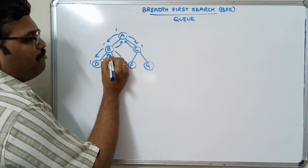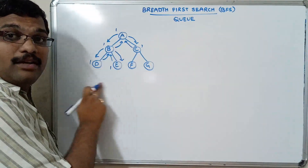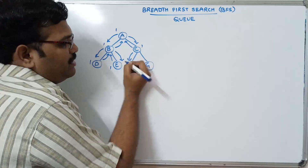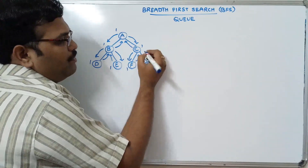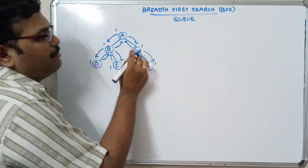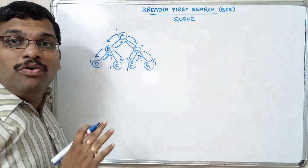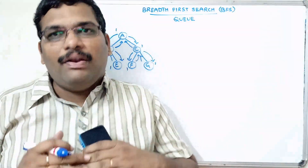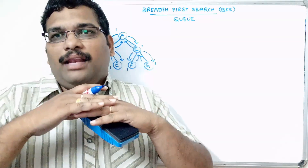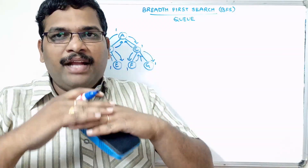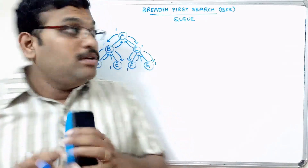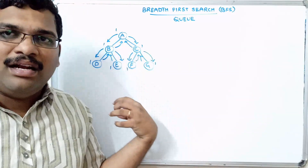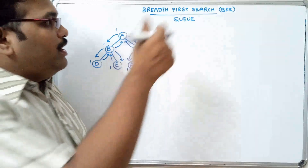Backtrack because there are no adjacent nodes for E, so backtrack to A. Come to C, visit F, backtrack to C, visit G, backtrack to C, backtrack to A. We visit nodes level by level — first complete level zero (the top level), then level one, then level two, then level three.